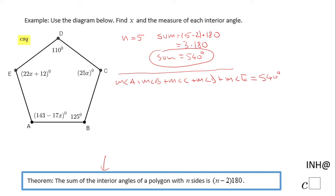And now we're going to replace all these angle measures with the expressions given. The measure of angle A is 143 - 17x. The measure of angle B is 125 degrees. The measure of angle C is 25x.